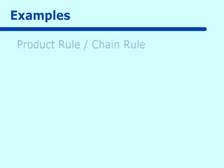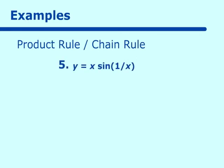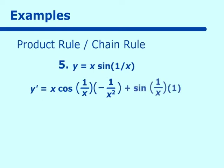Let's try an example that uses product rule as well as chain rule. For y prime, we use the product rule. It's x times the derivative of sine of (1/x). For sine of (1/x), the outside is sine and the inside is 1/x. We take the derivative of sine, which is cosine of (1/x), then go inside and take the derivative of 1/x, which is negative 1 over x squared. Plus sine of (1/x) times the derivative of x, which is 1. Cleaning this up: negative cosine of (1/x) over x, plus sine of (1/x).